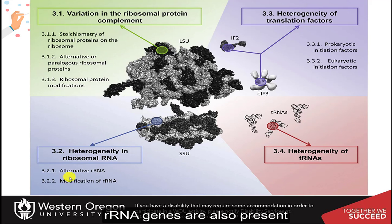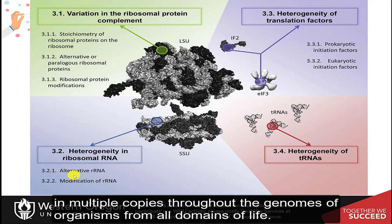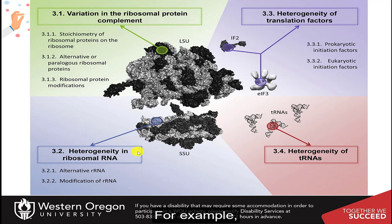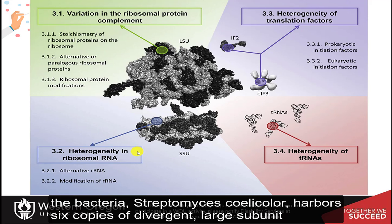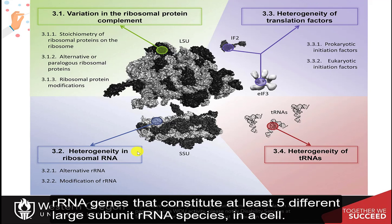Ribosomal RNA genes are also present in multiple copies throughout the genomes of organisms from all domains of life. For example, the bacteria Streptomyces coelicolor harbors six copies of divergent large subunit ribosomal RNA genes that constitute at least five different large subunit ribosomal RNA species in a cell.